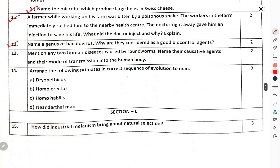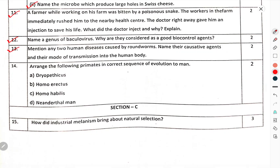What did the doctor inject and why — explain? Question number 12 — Name a genus of bacilli virus that is considered a good biocontrol agent. Question number 13 — Mention any two human diseases caused by roundworms. Name their causative agents and their mode of transmission into the human body.